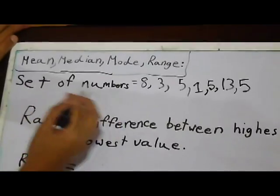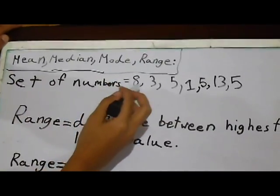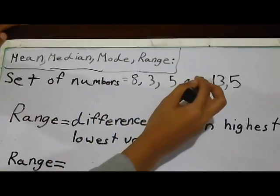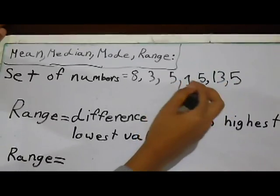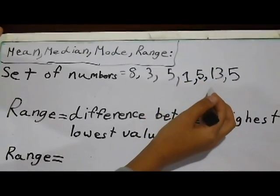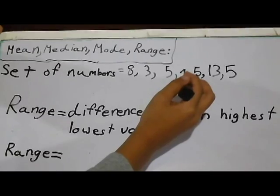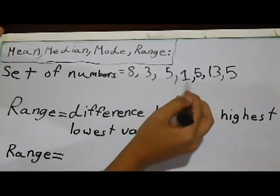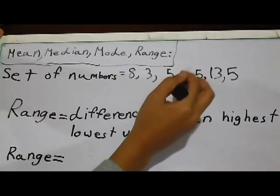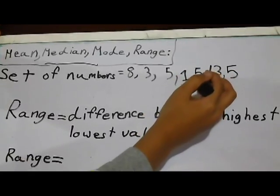Okay, so, here is my set of numbers. 8, 3, 5, 1, 5, 13, and 5. So, which one would you think would it be? It would be 13 and 1. Because no number can be lower than 1, except 0, and higher than 13.